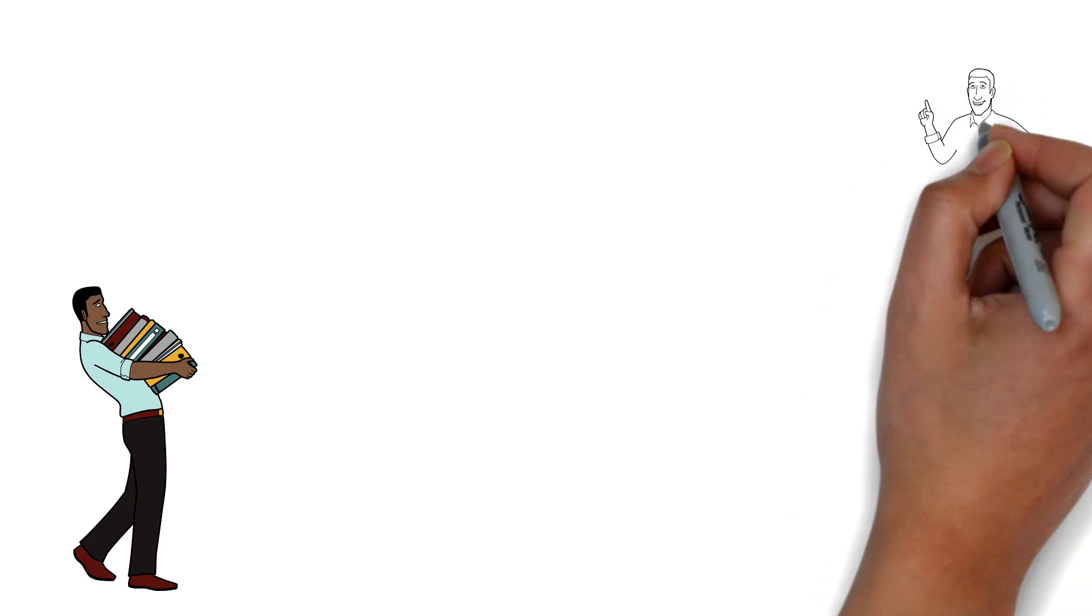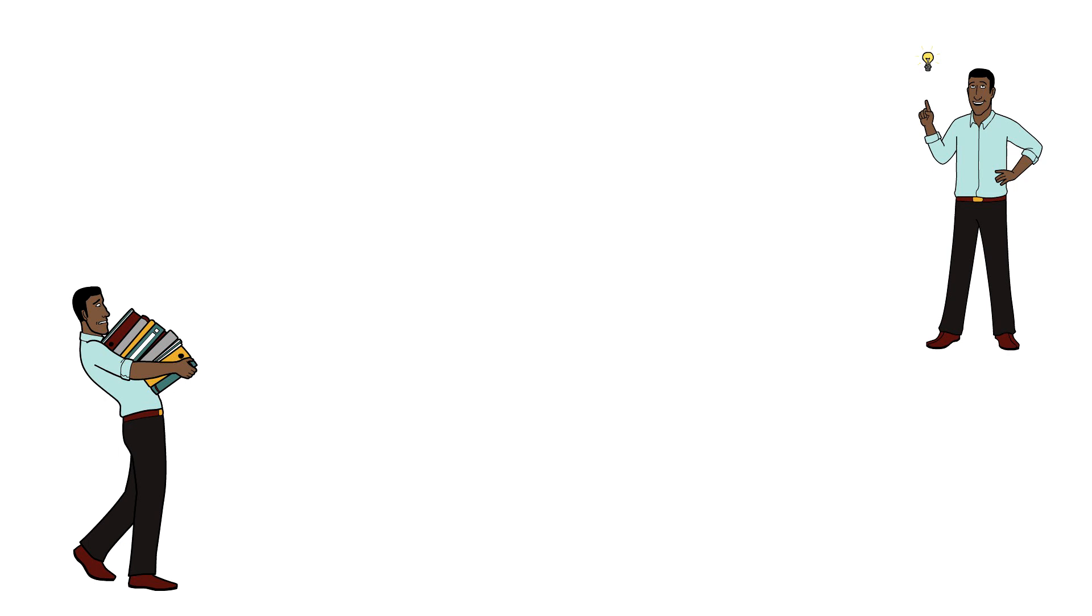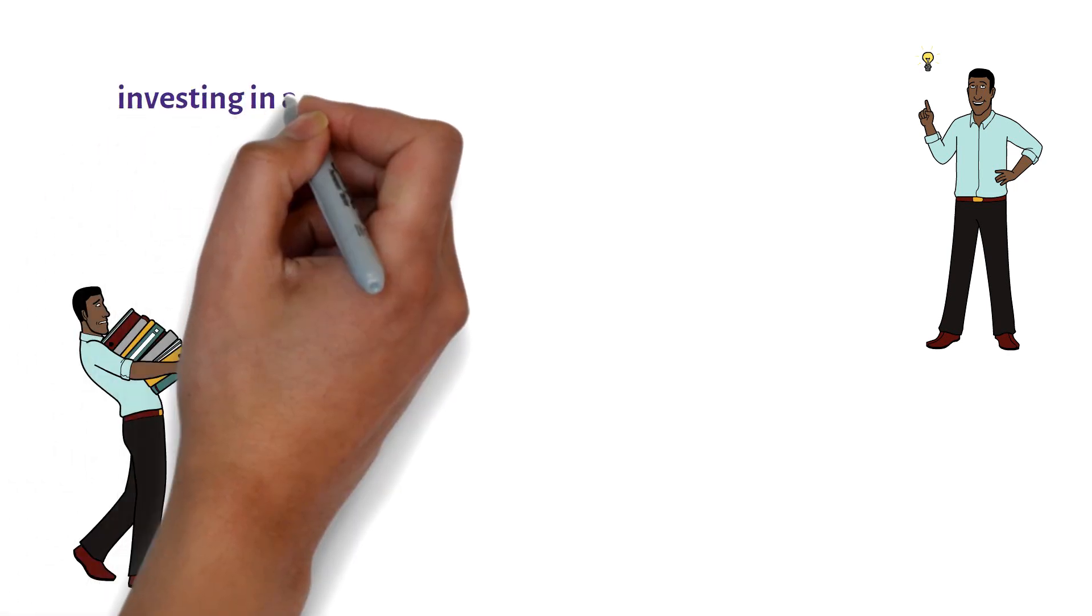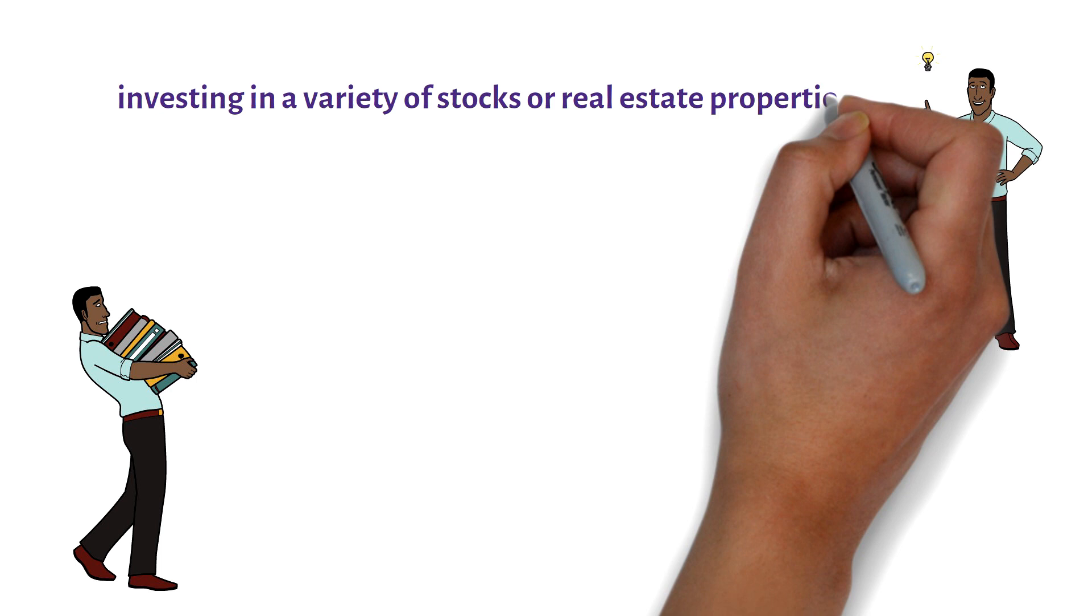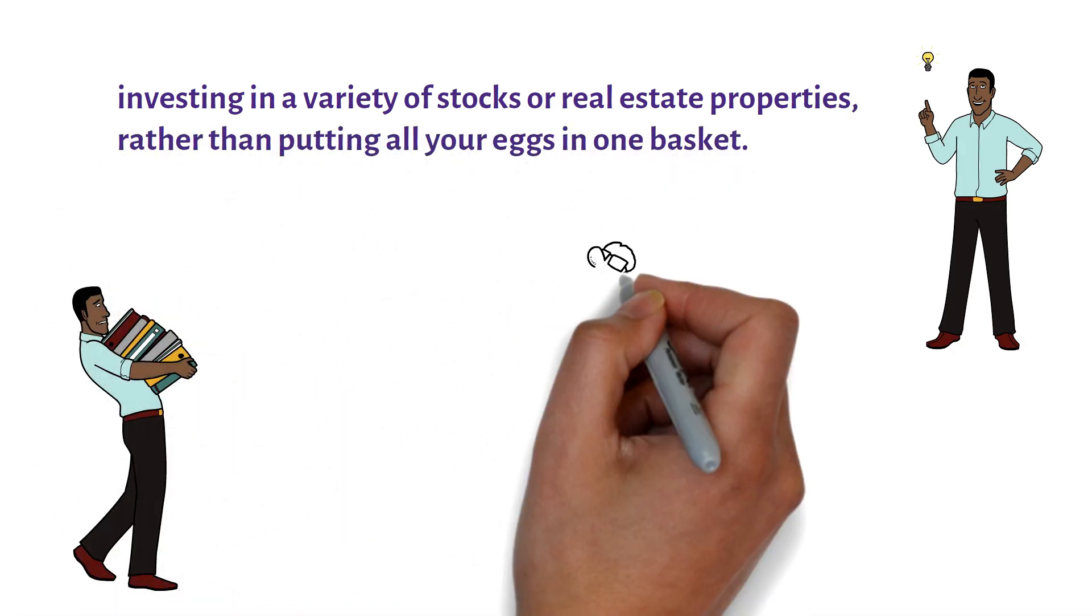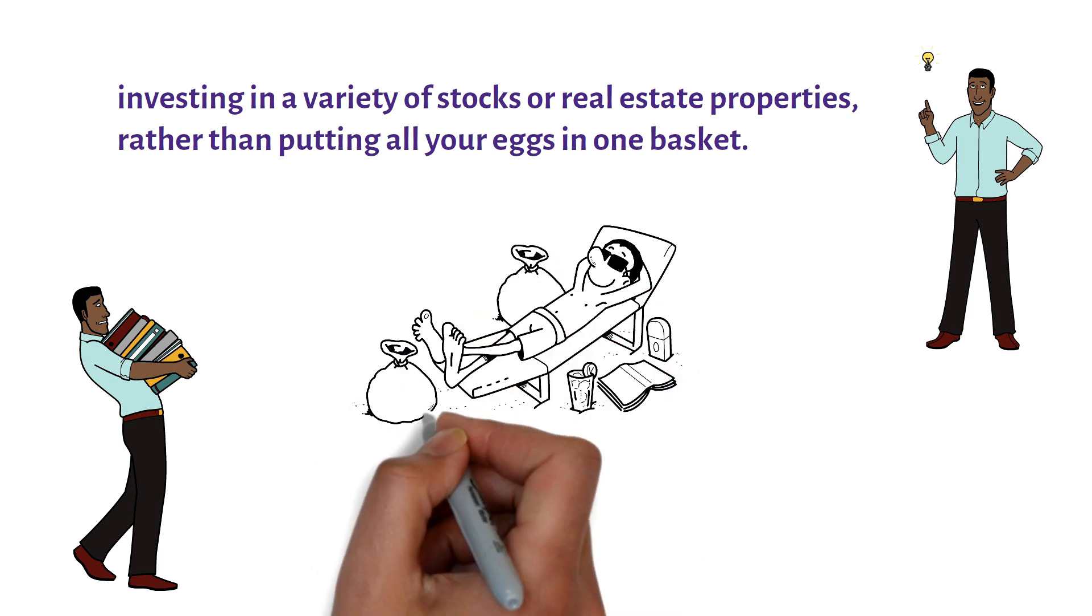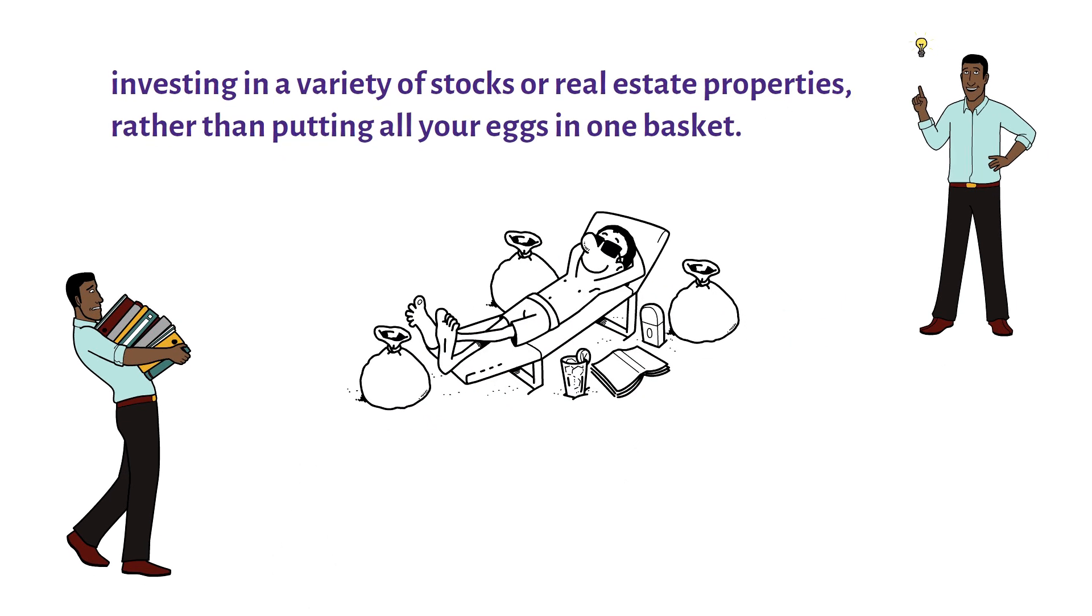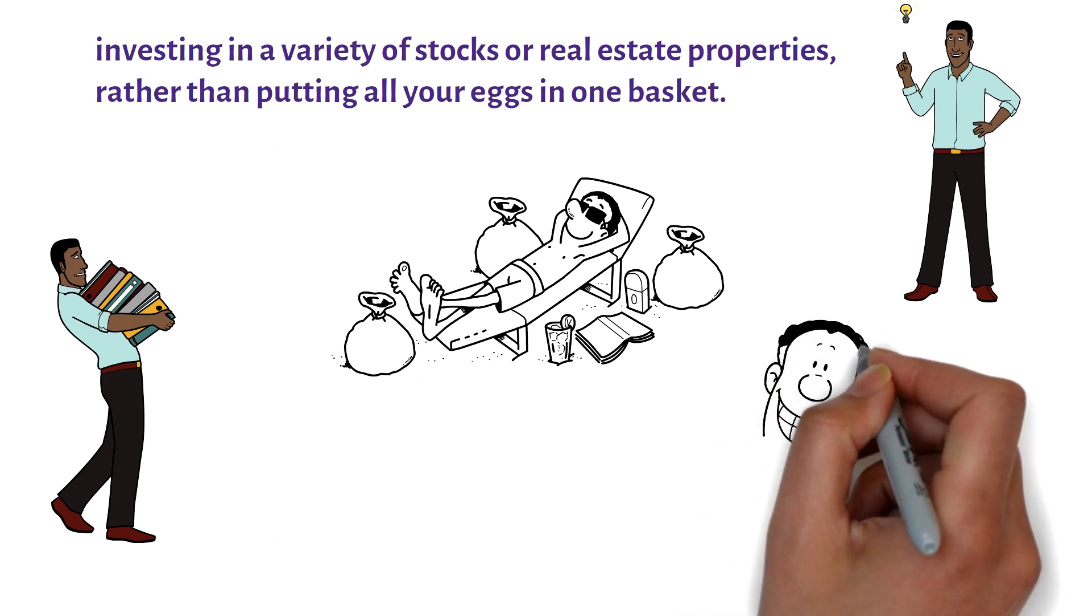One way to mitigate risk is to diversify your portfolio. This means investing in a variety of stocks or real estate properties rather than putting all your eggs in one basket. By spreading your investments across multiple options, you can reduce your exposure to any one investment and potentially minimize losses.